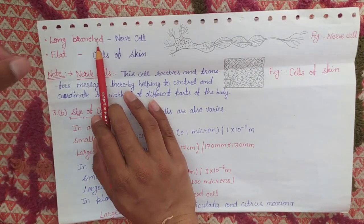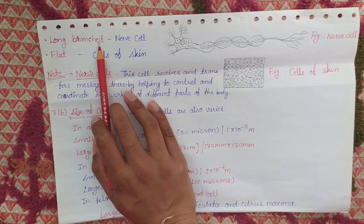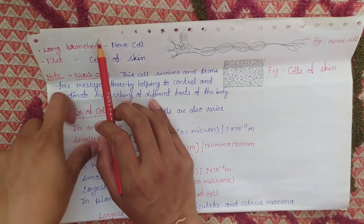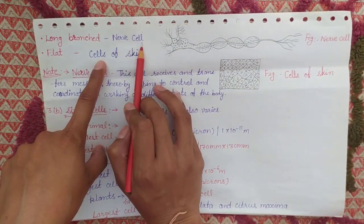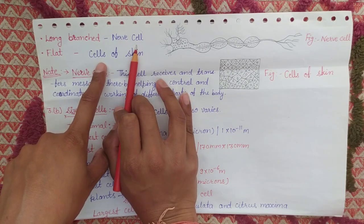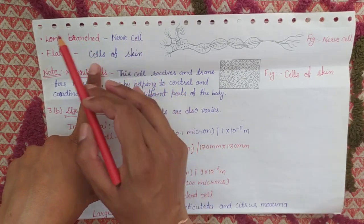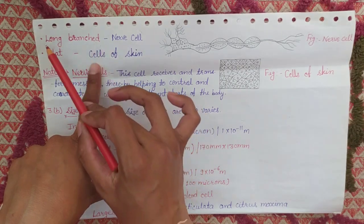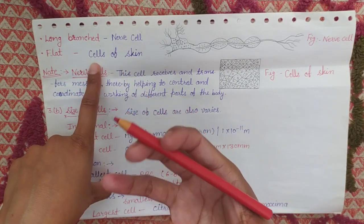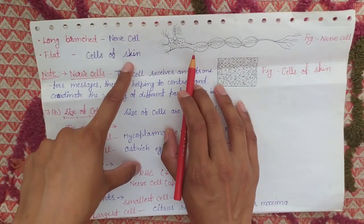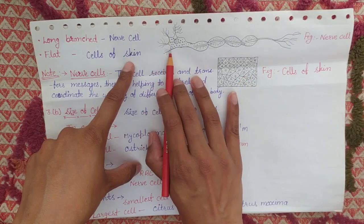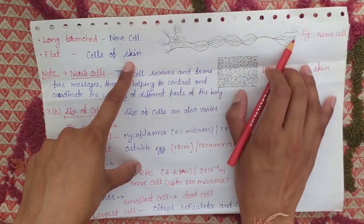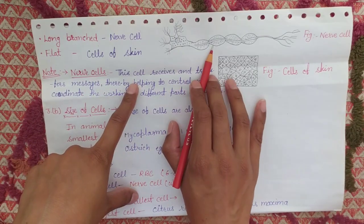Long branched cells are those which are long and have many branches coming out from them. The example is nerve cells. Our nerve cells, which are present in the brain, are long and branched — they are long and divided into many branches. So you may see that figure: the nerve cells are long and branched, with many branches coming out. That is the long branched cell.